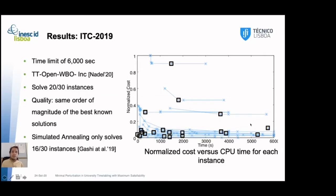So, the results. We run everything with a time limit of 6000 seconds. More of that is unnecessary, as the solution stops improving after that. We use the TT OpenWBO Inc. SAT solver that won the weighted incomplete track of the max SAT evaluation of this year. At the time of the submission of this paper, we only solved 20 out of 13 instances. The value increased, fortunately. The quality of these instances are in the same order of magnitude as the best known solutions today. The simulated annealing approach only solved 16 out of 13 instances. This is an approach by Anand Gashi that also finished in the top 5 of the competition. It's the only other open source solution that we could compare it with.